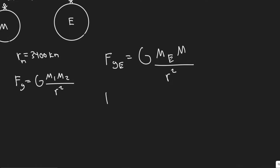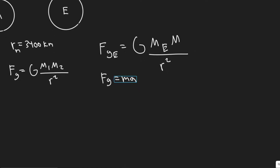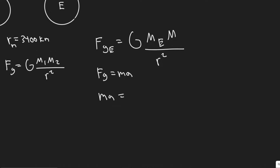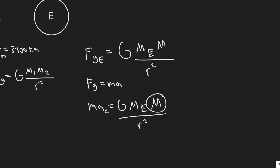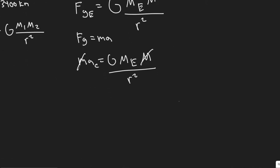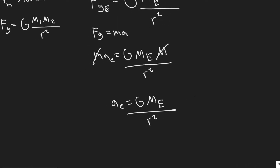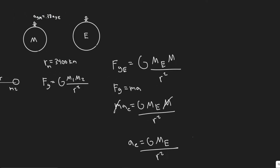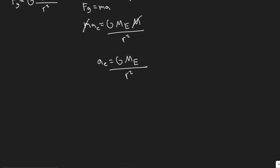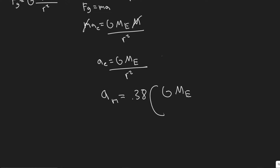We also know that the force due to gravity equals M·A — mass times acceleration. So M·A_E equals G·M_E·M divided by R squared. Notice that M, the mass of our object, appears on both sides and cancels. So you have the formula for the acceleration an object experiences on Earth, which is just G·M_E divided by R_E squared. They tell us the acceleration due to gravity on Mars is 0.38 of this, so A_M equals 0.38 times G·M_E over R_E squared.